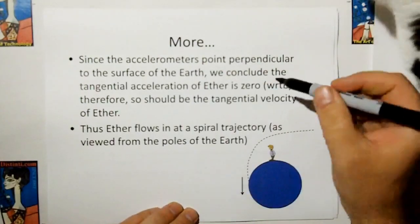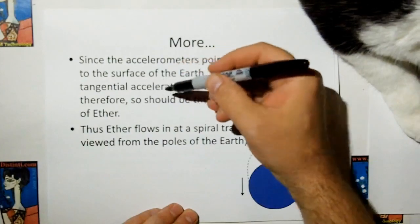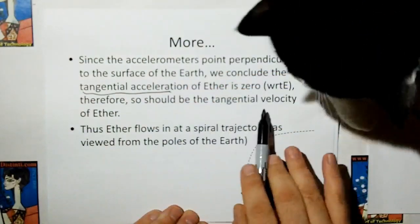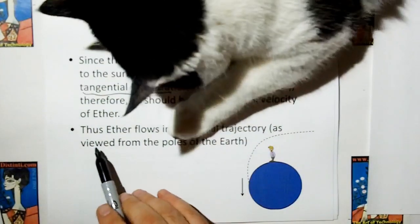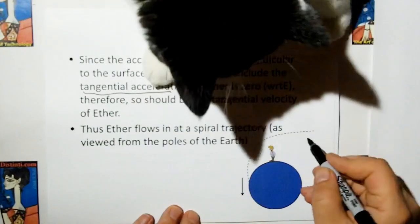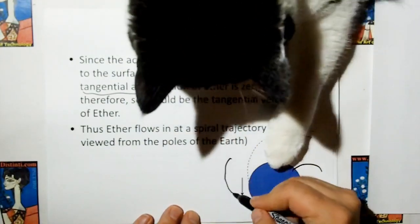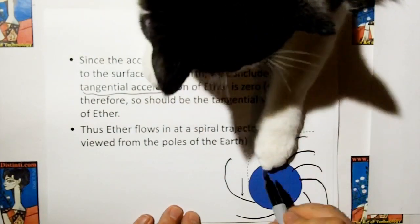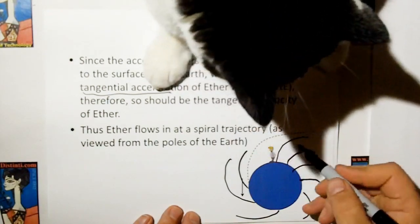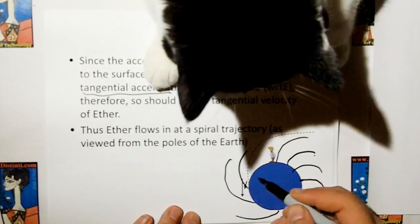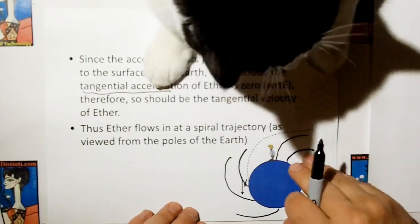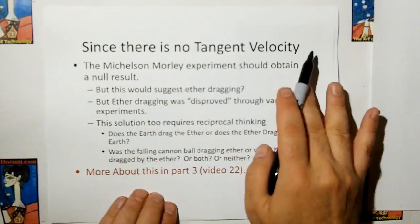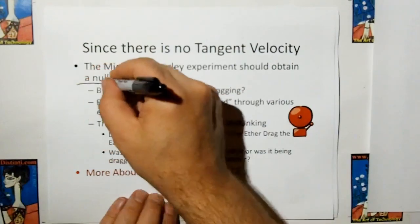The other thing. Since the accelerometers only point perpendicular to the surface of the Earth, we conclude that the tangential acceleration of the ether is zero with respect to the Earth. Therefore, so should be the tangential velocity of the ether. Thus, ether flows into the Earth in a spiral direction. Terence and Philip, this is the only bright spot in the house because it's a cloudy day, so expect Terence and Philip to come and help out. So the ether flows in in a spiral fashion, such that the velocity near the surface matches the velocity of the Earth. And that would explain, since there is no tangent velocity of the ether relative to the surface of the Earth, that the Michelson-Morley experiment should obtain a null result.